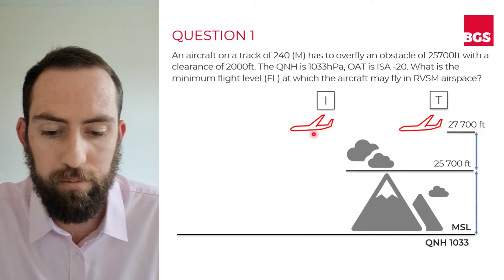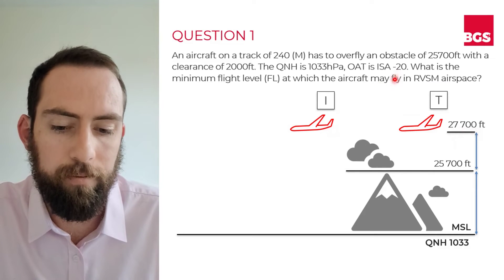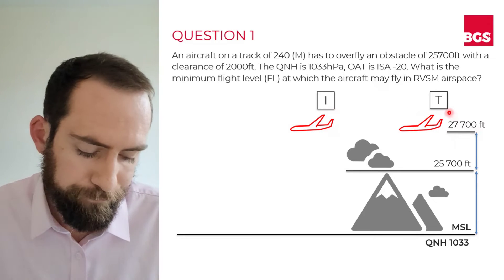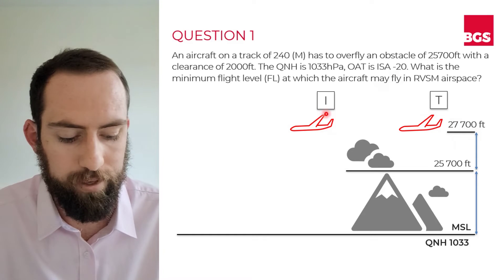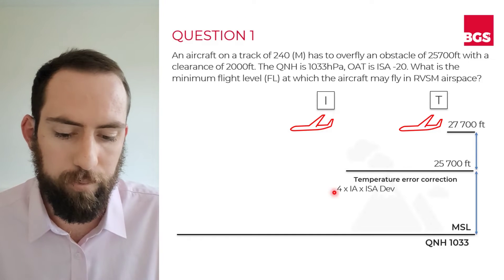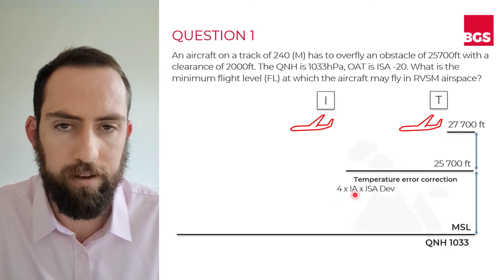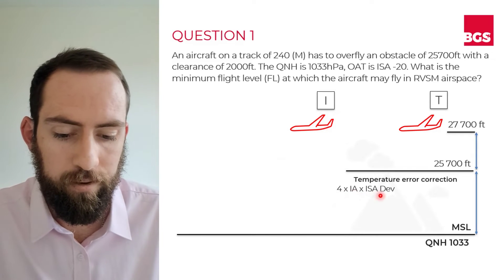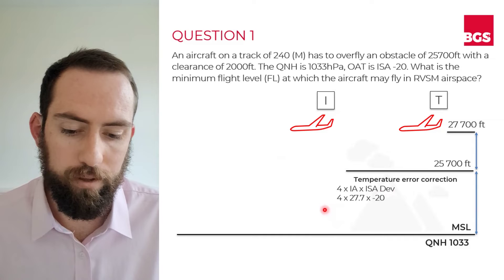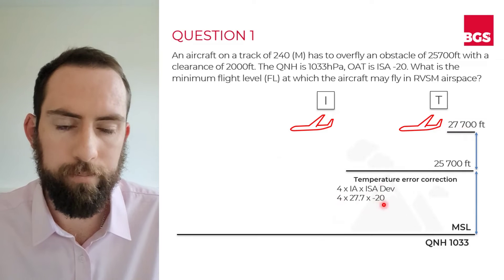If conditions were ISA, they would be exactly the same thing. But because conditions are 20 degrees colder than ISA, we would expect that our indicated altitude is going to be higher than our true altitude. To find out what our indicated altitude is going to be, we need to do a temperature error correction. There's a formula that gives us a good approximation of what that correction would be, and that's four times our indicated altitude in thousands of feet, multiplied by our ISA deviation. So in this case, it's four times 27.7 — our true altitude — multiplied by minus 20.